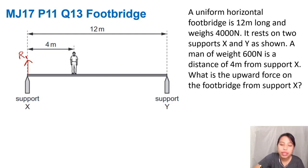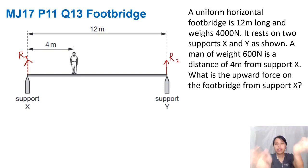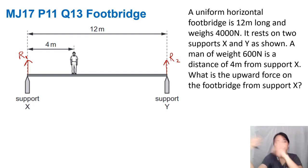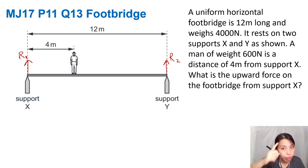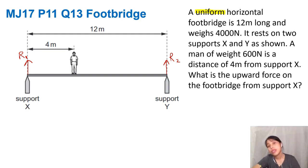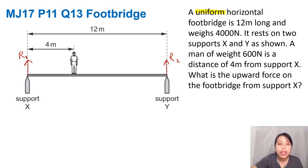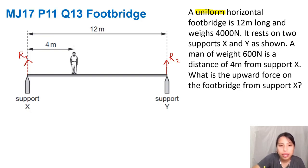First step when you see questions like this: draw all the forces at play — anything you know from your types of forces, reaction, friction. Nothing's moving so no friction. Also remember the keyword 'uniform horizontal footbridge.' What does uniform mean? Uniform means the weight is evenly distributed throughout the whole rod. So we have the man's weight — let's draw that out.